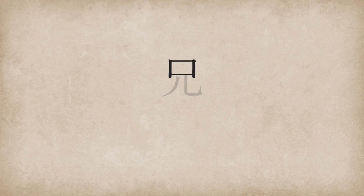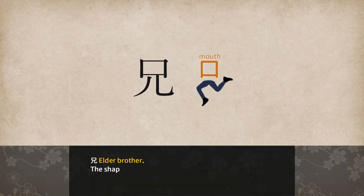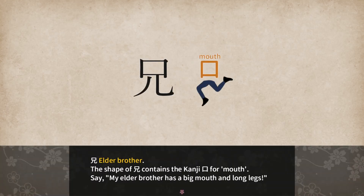Now we get the brothers. Elder brother: Ani for Kunyomi and Kei/Kyou for Onyomi. Written with 5 strokes. The shape of Ani contains the kanji Kuchi for mouth. Say: my elder brother has a big mouth and long legs.